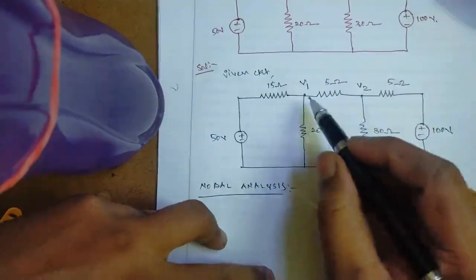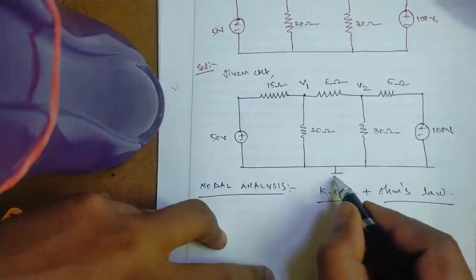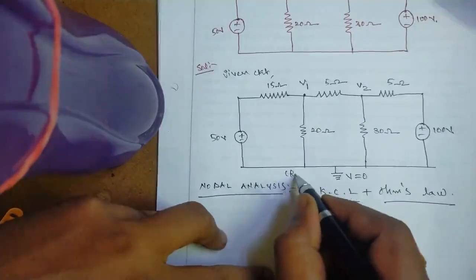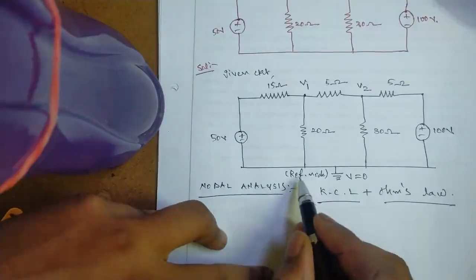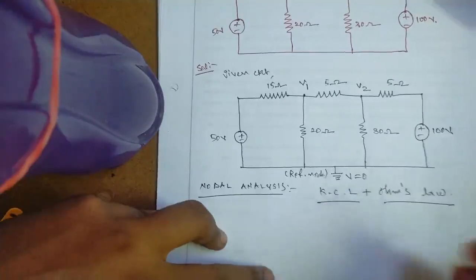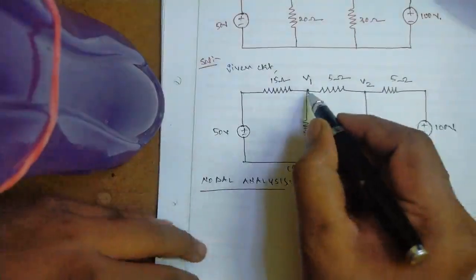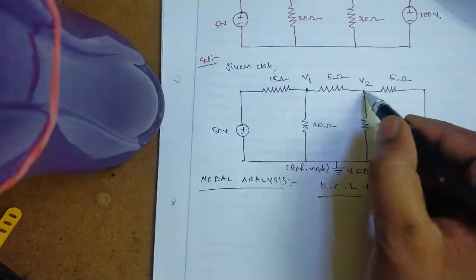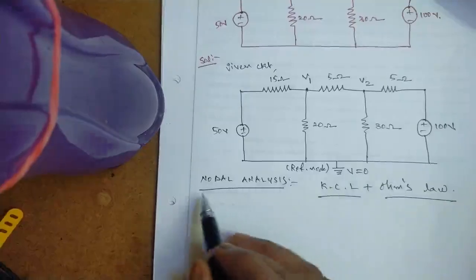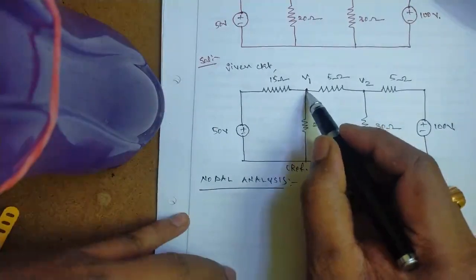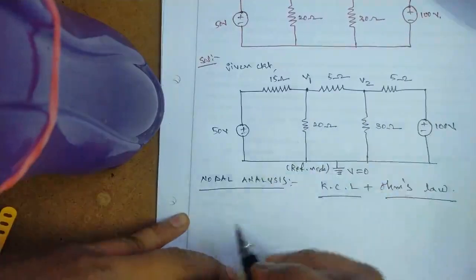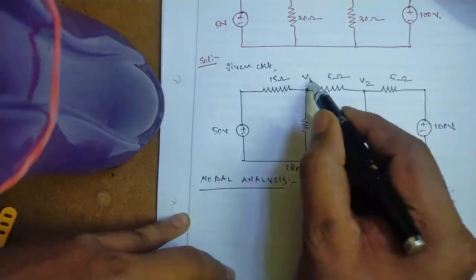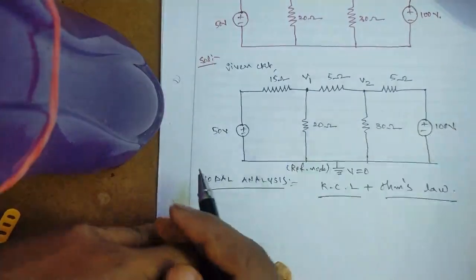All elements are connected to node 1 and node 2. We take a reference node whose potential is 0. V1 is the node voltage at node 1, and V2 is the node voltage at node 2. In nodal analysis we identify the basic nodes — nodes which contain at least one new element or new branch — and name them V1, V2, V3, and so on. Then we write the nodal equations.